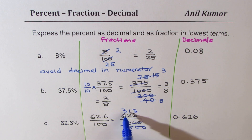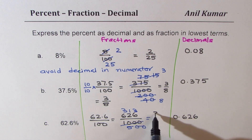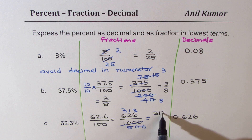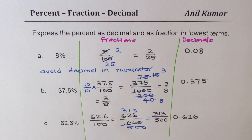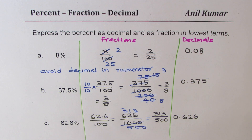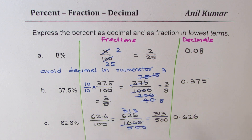Now let us simplify. Both 626 and 1000 can be divided by 2, so we get 313 over 500. That does not appear divisible by 5, 10, or 2, so we write this as 313 over 500. That is how you can convert percent to decimals and fractions — remember to avoid a decimal in the numerator.